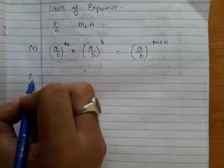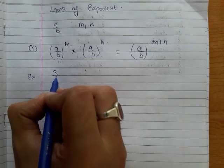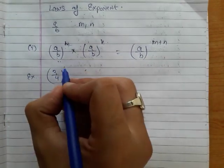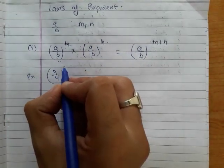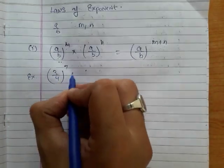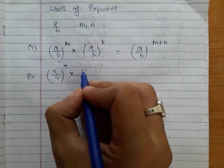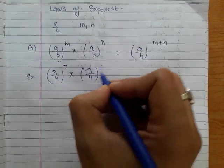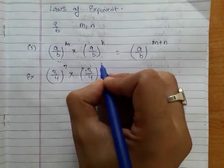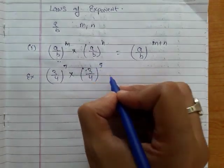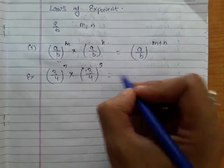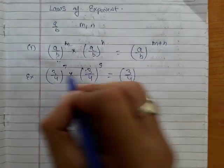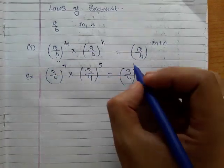Let's take one example. Suppose there is a rational number 3 over 4 raised to the power 7, and it is multiplied with the same rational number 3 over 4 raised to the power 5. So we can simply write it as 3 over 4 and add the powers.